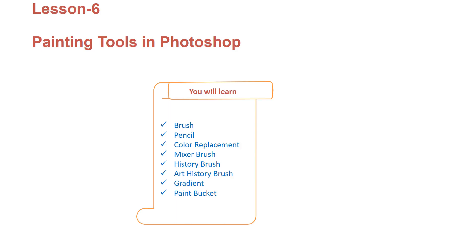This is lesson number six: painting tools in Photoshop. We are going to see brush, pencil, color replacement, mixer brush, history brush, art history brush, gradient, and paint bucket.